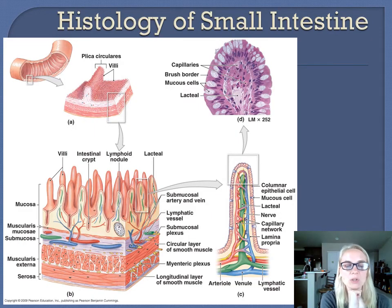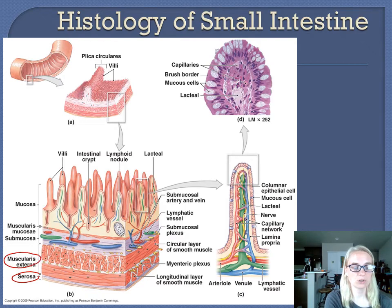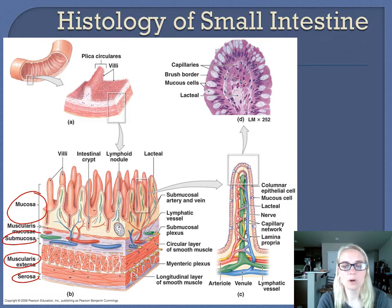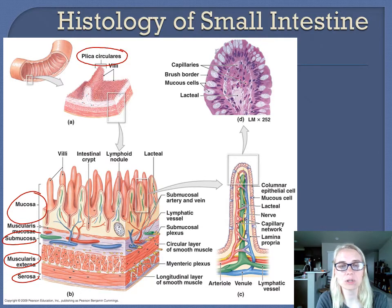Here we have a picture showing a section of the alimentary canal, similar to the first picture of the layers. There are four layers: serosa, muscularis externa, submucosa, and mucosa — with the plexuses, muscularis mucosa, blood vessels, nerves, and lymph. In this picture, I want to highlight three modifications of the lining of the small intestine that increase surface area to make nutrient absorption efficient.